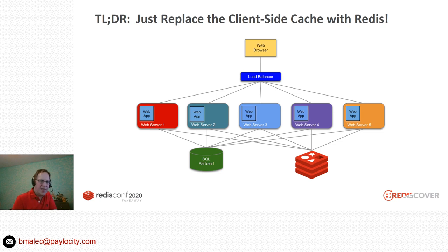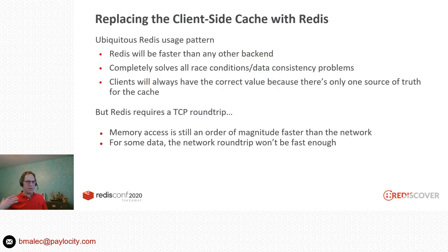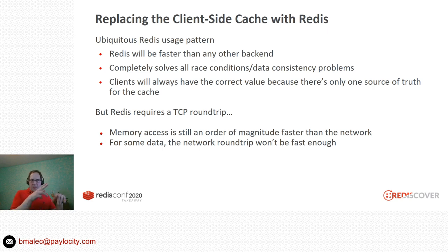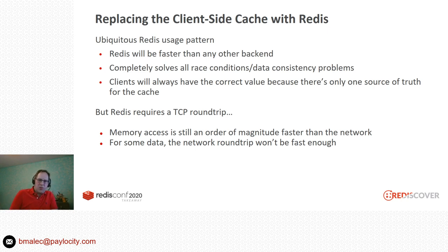Another solution is to dump the client-side cache altogether and just replace it with Redis. This is a very common solution and for many scenarios it's great. Redis is very fast — faster than any other network-driven back-end. You solve any race conditions or consistency problems because you have one source of truth, which is Redis, and all the web servers always go to Redis to get the latest value. In cases where multiple web servers update a value at a similar time, whoever writes last to Redis wins.